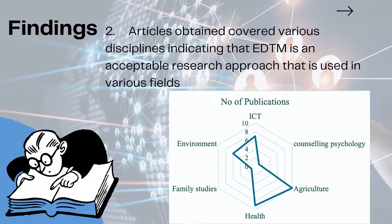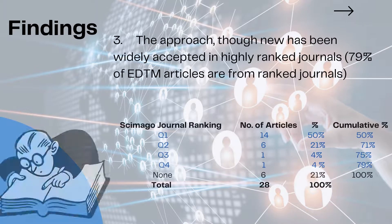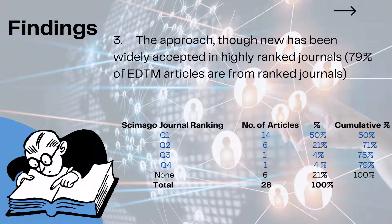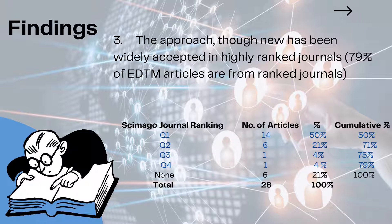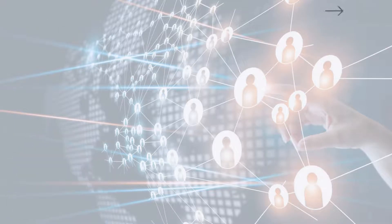In addition, we find that this approach, though still new, has been used for articles published in highly ranked journals, showing 79% of articles from ranked journals and 50% of them in the first quartile as ranked by the CIMACO journal ranking. This shows how this methodology can actually be useful.